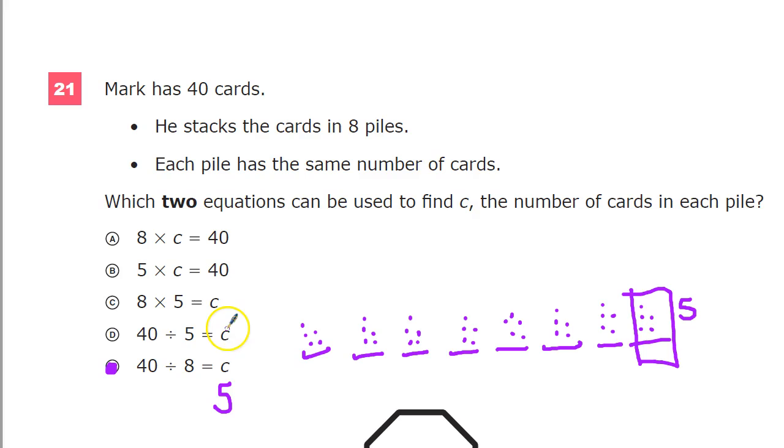You'll notice that this one says 40 divided by 5 equals C. Well, you may think, well, eight times five is 40, and that gets you there, right? But the value of C is not eight. It's five. So, this won't help you.